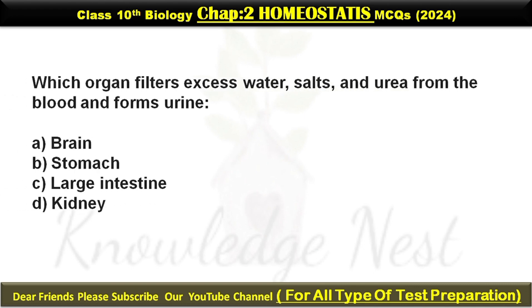Which organ filters excess water, salt, and urea from the blood and forms urine? Option D is the correct answer.